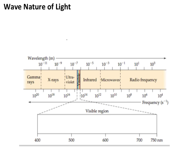We've discussed that electromagnetic radiation consists of various types of light. We've also talked about the fact that specific types of light have specific wavelengths and frequencies.